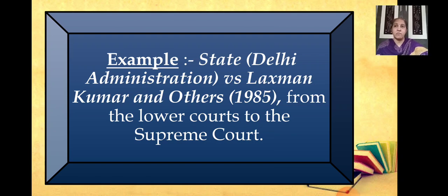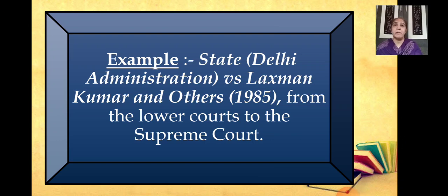They then approached the Supreme Court, which heard the appeal against the acquittal of Lakshman and the two members of his family, and reached a final decision that was different from that of the high court. So they went from the lower court, then the high court, then the Supreme Court. This is the appellate system — a person can approach a higher court if they are not happy with the decision of the lower courts. The decision given by the Supreme Court is the final.